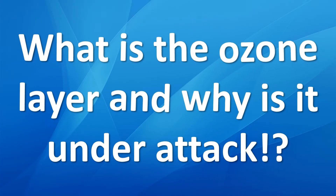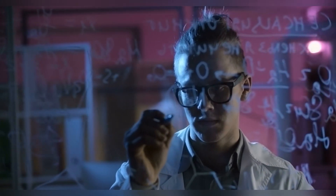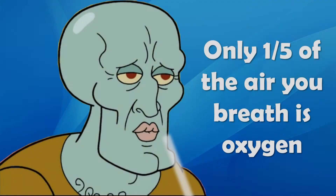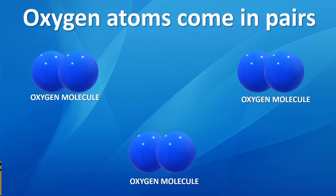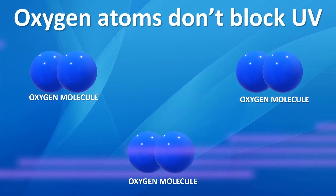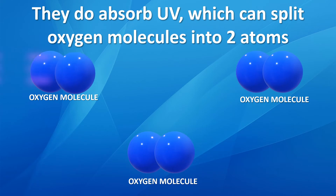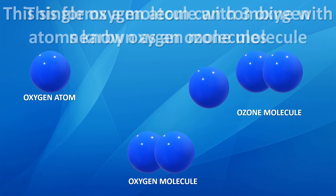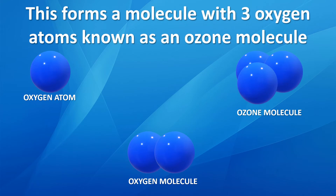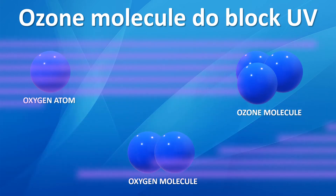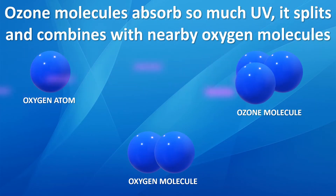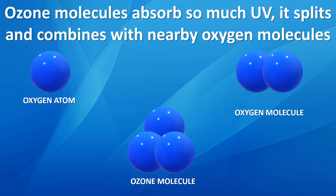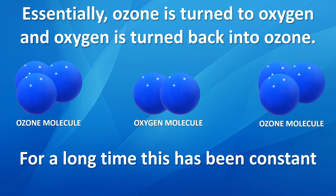But what is the ozone layer and why is it under attack? Let's explore the default settings of the ozone so we can understand what went wrong. Only one fifth of the air you breathe is oxygen. Those oxygen atoms come in pairs, but they do a lousy job at blocking UV. However, they do absorb UV, which can split oxygen molecules into two separate oxygen atoms. This single oxygen atom can combine with nearby oxygen molecules, forming a molecule with three oxygen atoms known as an ozone molecule. Ozone molecules do a great job at blocking UV, but they absorb so much UV that at some point they will split and combine with nearby oxygen molecules. Essentially, UV-blocking ozone is turned to UV-vulnerable oxygen, and UV-vulnerable oxygen is turned back into UV-blocking ozone. And for a long time, this healthy, sustainable process has been constant.